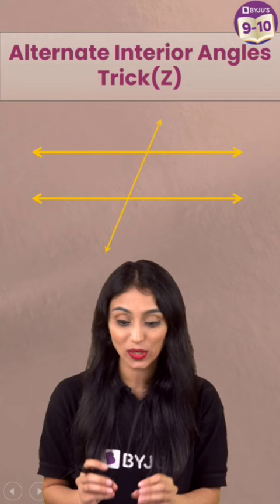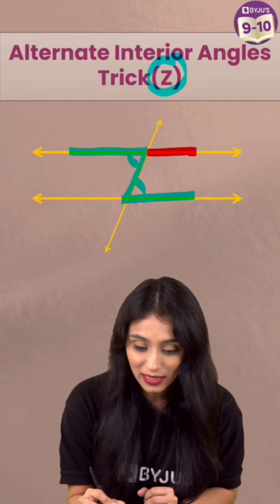So you can see a z is formed here, so is tarah se ye dono angles equal ho jayenge, and you can see ye hai alternate interior angles. Similarly, yahan par ye reverse z ban raha hai, to ye wale angles bhi equal honge.